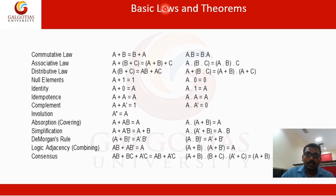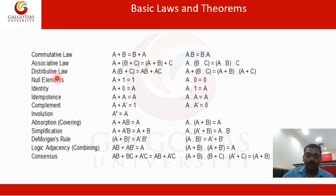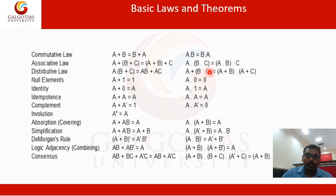Now these are the basic laws and theorems in Boolean algebra. The first is the commutative law: A plus B equals B plus A, and A dot B equals B dot A. Similarly we have associative law, distributive law, null element, identity element, idempotence, complement, involution, absorption, simplification, De Morgan's law, logical adjacency, and consensus. These are the basic Boolean laws.